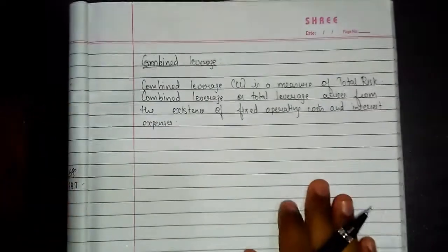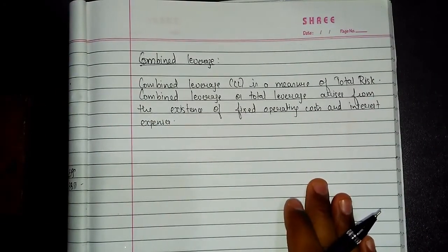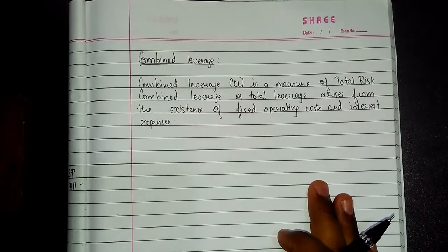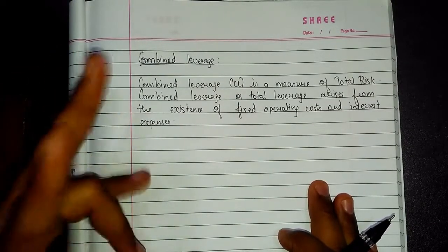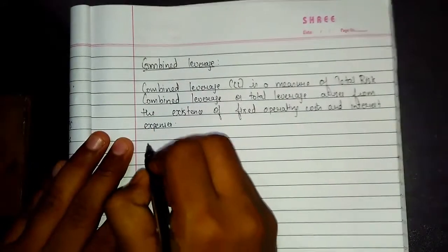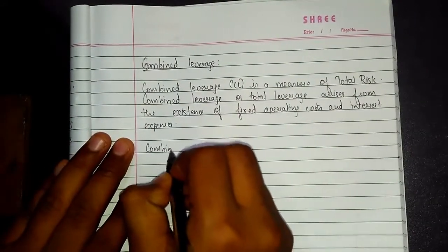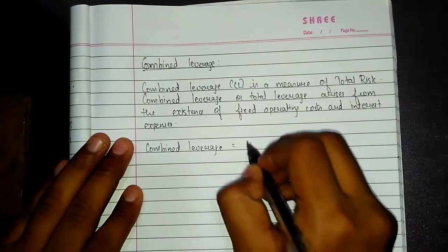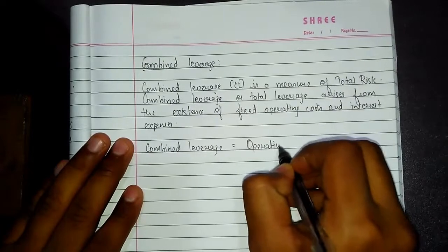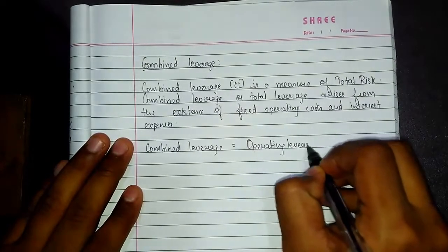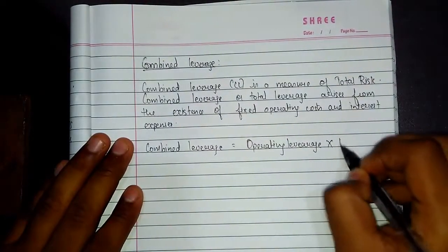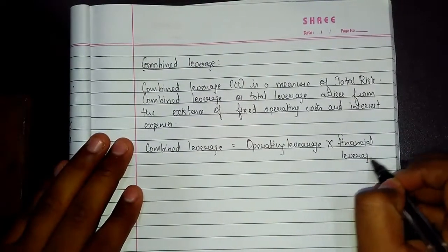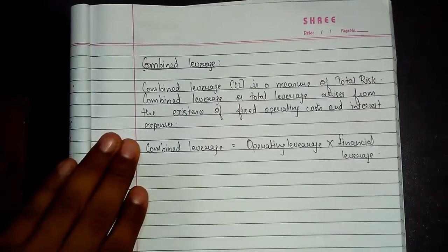For combined leverage formulas, I just need to write one formula and you will know all the formulas of combined leverage. There are two formulas. Combined leverage is equal to operating leverage into financial leverage. This formula is applicable for both the static as well as the dynamic formula.